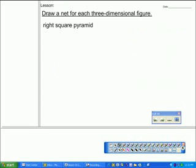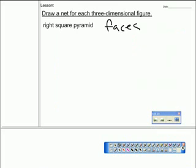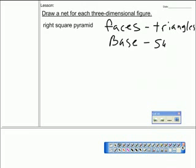So right square pyramid. It's a pyramid so all the faces are? Pyramid, faces are? Triangles or rectangles? Triangles. That's right. So the faces are triangles and the base is what? Square. Very good. That's all you need to know.